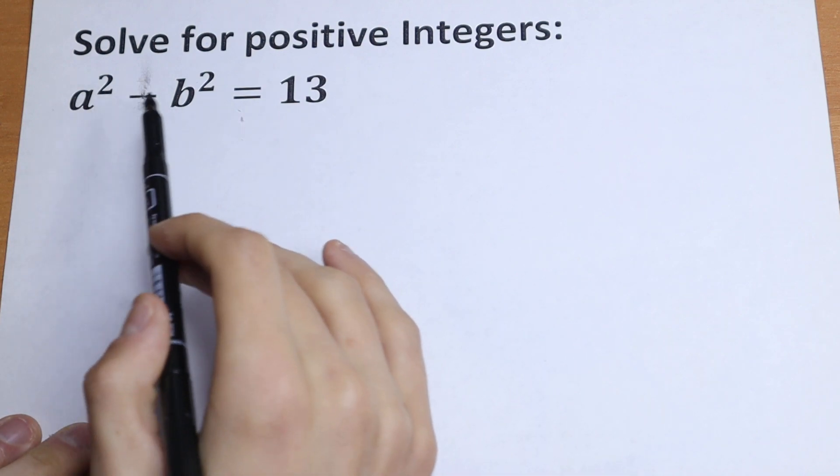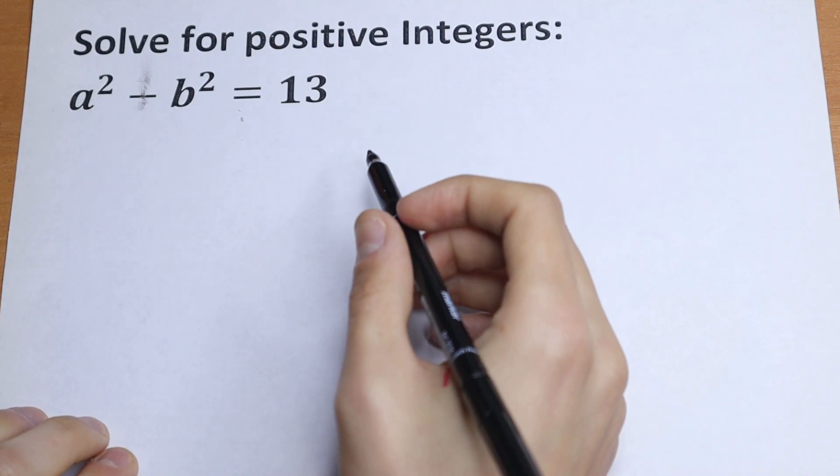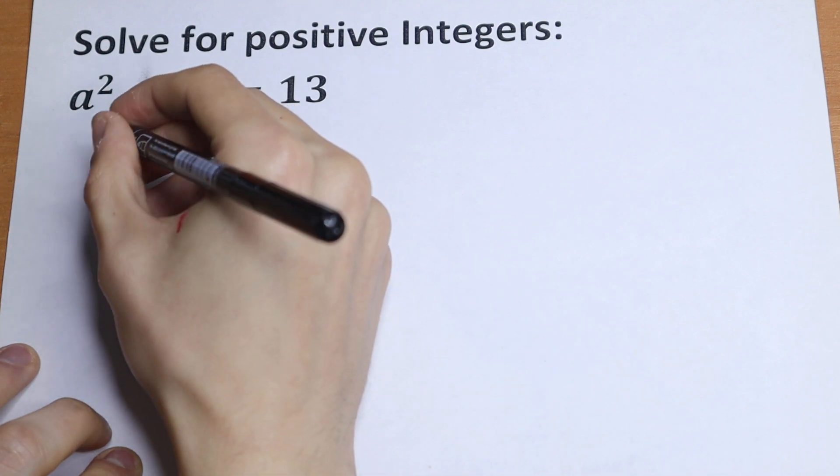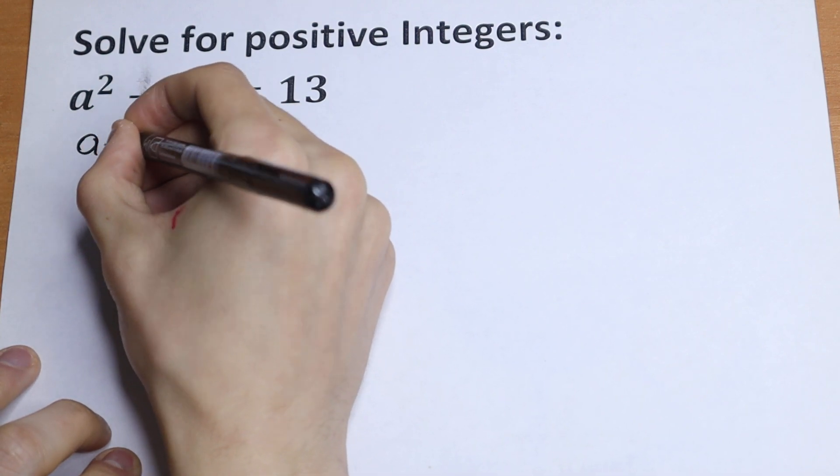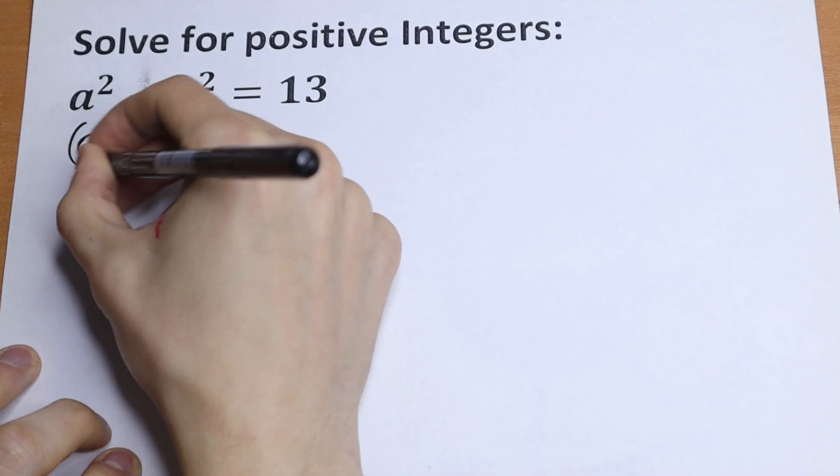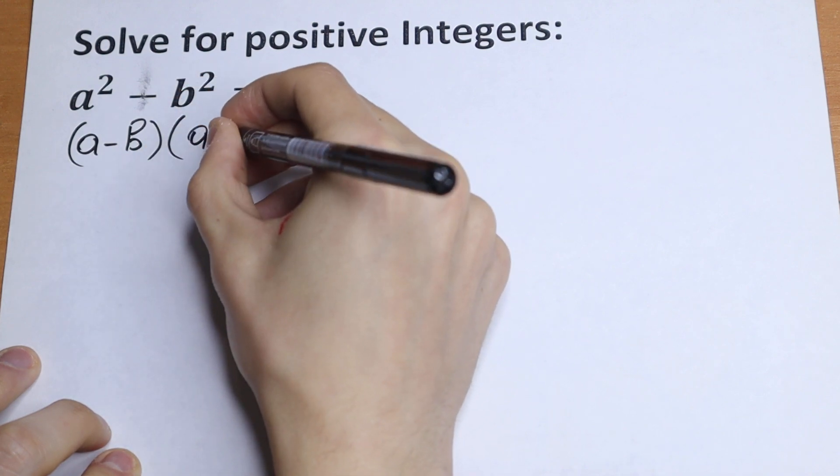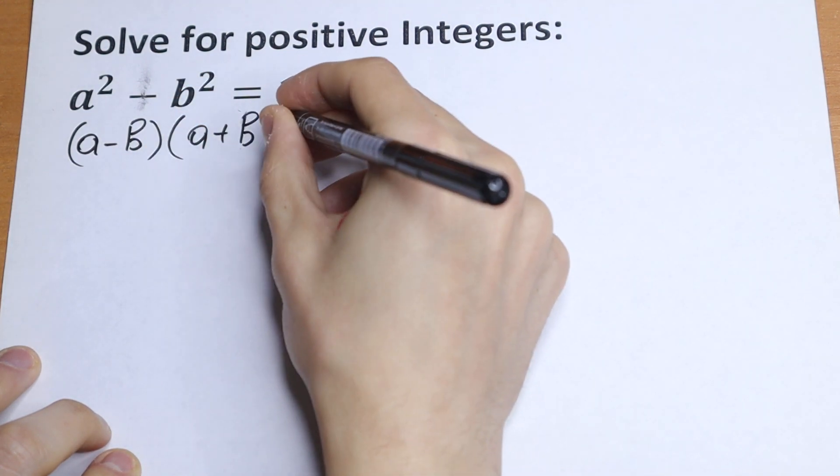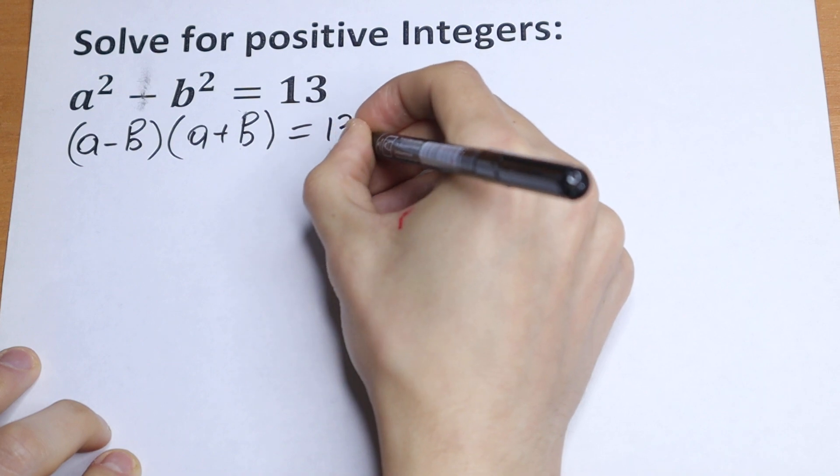I see a squared minus b squared, and I can split it into an identity. So let's do this at first. We will have a minus b times a plus b. Nothing hard, just use the formula equal to 13.